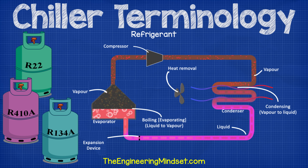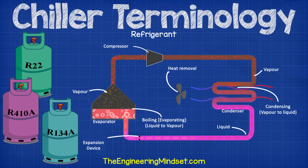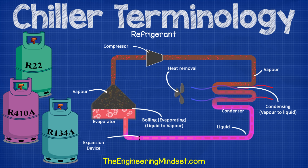Refrigerant. This is a specially designed fluid which moves around the inside of the chiller, collecting the unwanted heat from the evaporator and moving this over to the condenser so that the heat can be rejected from the building. It changes states between liquid and gas during the refrigeration cycle. It is moved around the chiller by the compressor. The refrigerant stays within the chiller and is always kept separate from the condenser water and the chilled water. Refrigerants will have strange names such as R134A, R1233ZD, etc.